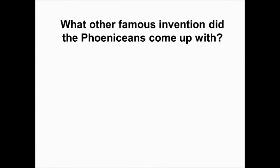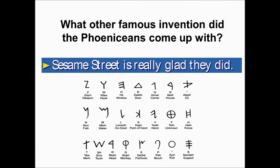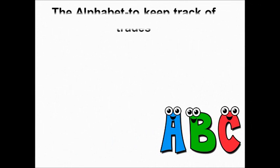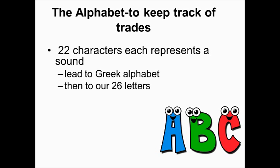This brings us to probably the most important invention of the Phoenicians — and Sesame Street is really glad they did it. They created an alphabet based on sounds. The Phoenician alphabet had 22 symbols, each representing a sound. There were no vowels — those were added later — and they had an extra consonant. But think about it: you went from thousands of symbols to just 22. They used the alphabet to keep track of their trade, and the 22 characters representing sounds led to the Greek alphabet, then the Latin alphabet, and eventually our own.